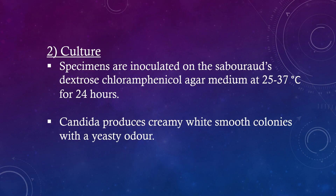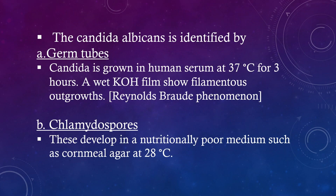Culture: Specimens are inoculated on Sabouraud's dextrose chloramphenicol agar medium at 25 to 37 degrees centigrade for 24 hours. Candida produces creamy white smooth colonies with a yeasty odor. Candida albicans is identified by germ tubes: Candida is grown in human serum at 37 degrees centigrade for 3 hours. A wet potassium hydroxide film shows filamentous outgrowths — the Reynolds-Braude phenomenon.